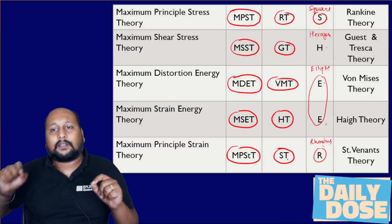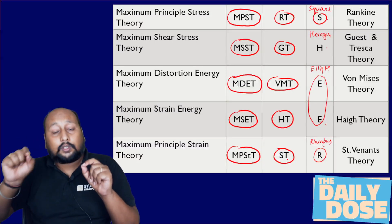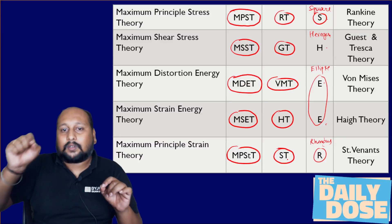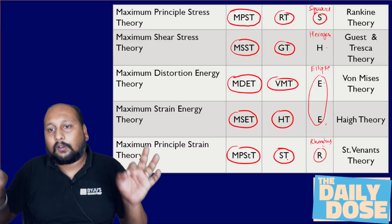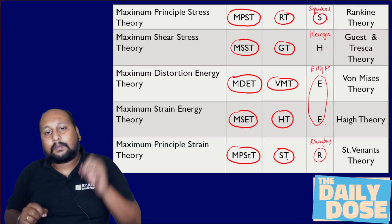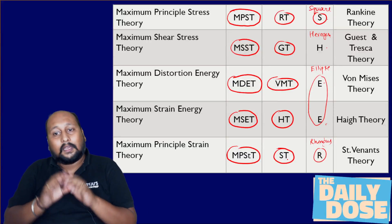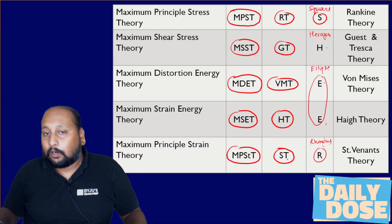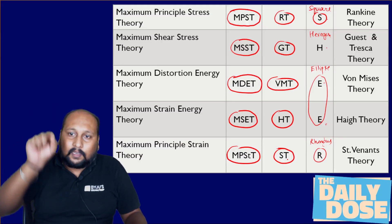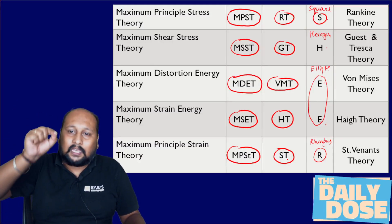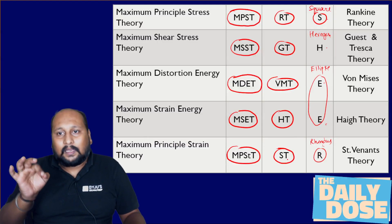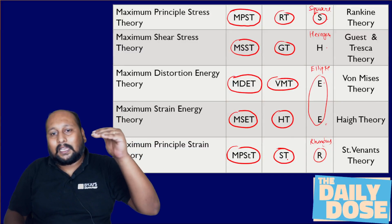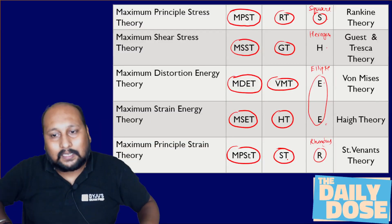MSST — Guest and Tresca theory — hexagon. Maximum distortion energy theory, that is Von Mises theory — ellipse. Maximum strain energy theory, Higgs theory — also ellipse. And the last one, maximum principal strain theory, St. Venant's theory — rhombus. So the shape of the failure region is very important, and SHEER will be the sequence to remember. MPST, MSST, MDET, MSET, and MPST.